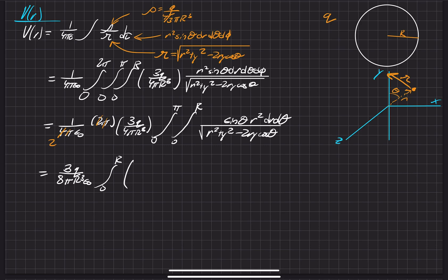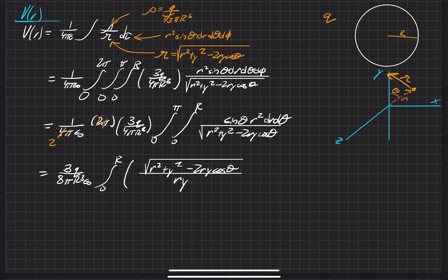I just went ahead and used an integral table to solve this one — it's not too crazy, thankfully. This is evaluating the theta integral from 0 to pi, with r squared dr remaining. At this point we can clean up — the r from the law-of-cosines square root goes away, and nothing really happens to the constants on the outside.